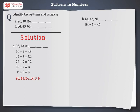Next, in the second pattern, 9 is subtracted from 54 to get 45. 9 is further subtracted from 45 to get 36. Following the same pattern, 9 is subtracted from 36 to get 27. 9 is again subtracted from 27 to get 18. Finally, 9 is subtracted from 18 to get 9.